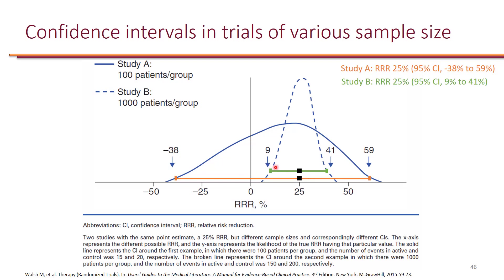It's also important to consider the confidence interval when assessing clinical significance. Although the point estimate was 25% relative risk reduction, the effect could be as low as 9% or as high as 41%. When making a decision for your patient, consider whether 9% and 41% are both clinically significant numbers. If the answer to both is yes, then the point estimate is clinically significant. However, if one end of the confidence interval — say, negative 38% — is not a good outcome for your patient, you cannot call the result clinically significant, because the true effect could actually be negative 38%.